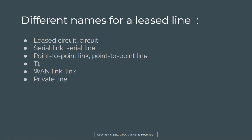There are different names for the leased line. 'Leased Circuit' — where 'Line' and 'Circuit' are used as synonyms. 'Serial Link' or 'Serial Line' — bits flow serially and routers use a serial interface. 'Point-to-Point Link.' 'T1' — which operates at 1.544 Mbps. 'Private Line' — meaning the data is private. And simply 'WAN link' or 'link.'